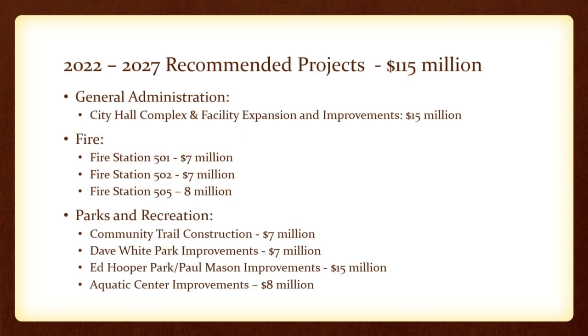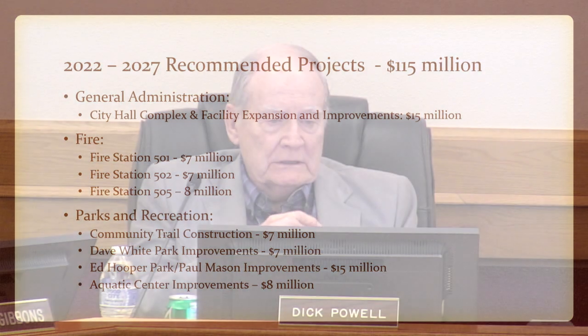The City Manager paused to entertain questions from the Mayor and Council. Council Member Powell asked about the Dave White Park allocation — clarifying the amounts: $7 million for the Athletic Center area, $15 million for City Hall, and $15 million for Ed Hooper and Paul Mason. That answered his question.